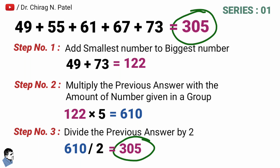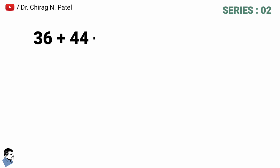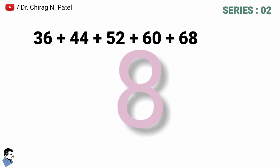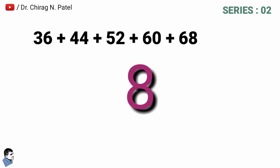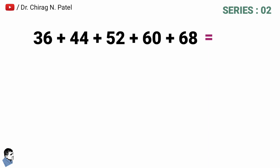Now let's take a few more series. The next series is 36 + 44 + 52 + 60 + 68, with a common difference of 8. Using a calculator, the answer equals 260. Let's now try it with the math trick. Add the smallest number to the biggest number — that means 36 + 68.